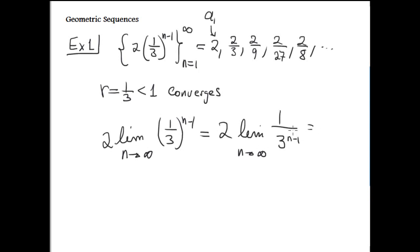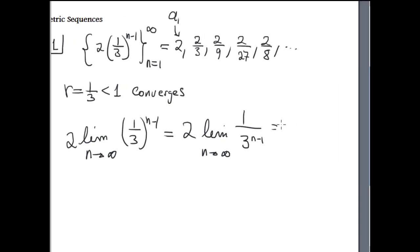So it says, look, 2 times 1 over 3 to the infinity, infinity minus 1 is still infinity, this is 0. The answer is 0, it converges. 2 times 0.